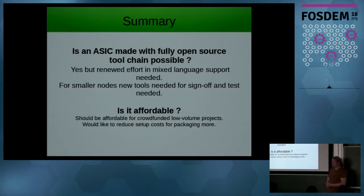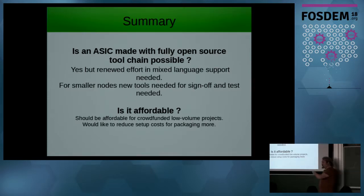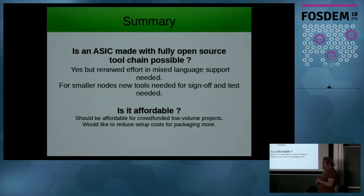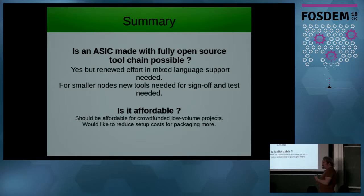Q: Are there open-source standard cell libraries usable with existing foundries? A: There is one open-source GPL standard cell library — if you go to vlsitechnology.org you can find these standard cell libraries. But they are GPL licensed, which means all the RTL code also has to be GPL licensed. I want something more usable where the standard cell library doesn't dictate which license you have to put on your RTL code.